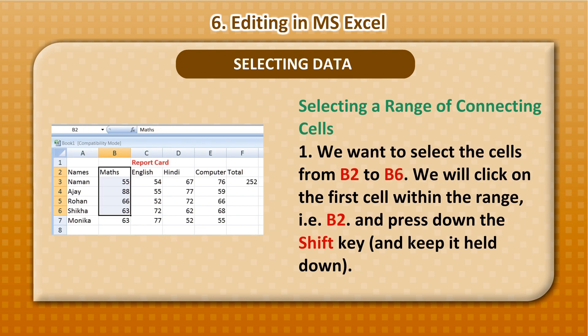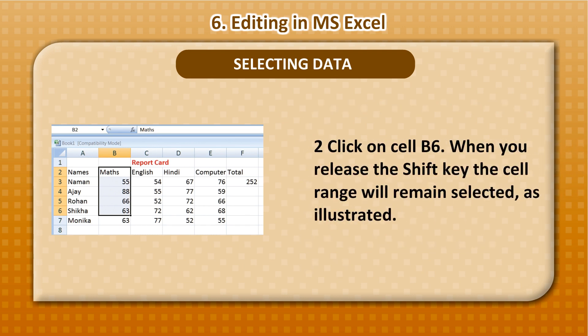Selecting a Range of Connecting Cells: To select cells from B2 to B6, click on the first cell in the range, i.e. B2, and press and hold down the Shift key. Then click on cell B6. When you release the Shift key, the cell range will remain selected.